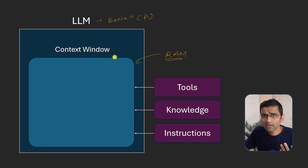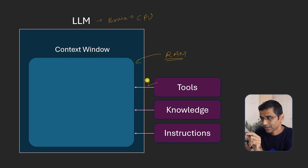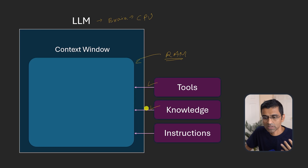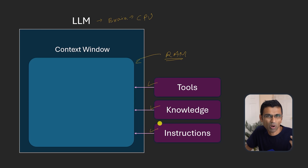You get that content through three different ways. First, through tools — for example, calling the Expedia API to get the right flight information. Second, through knowledge — if you're building a RAG-based system and pulling information from an Oracle or MySQL database, or even a PDF file. Third, through instructions — this is your prompt engineering, where you write the proper instructions.